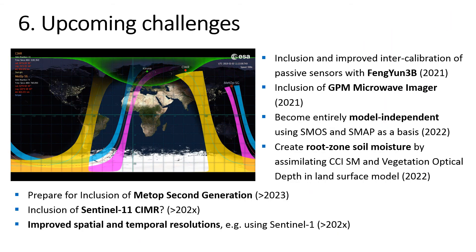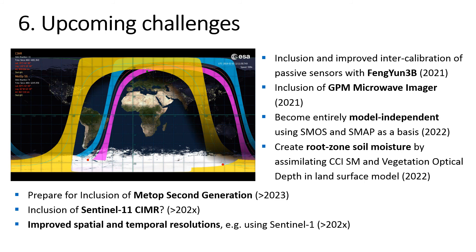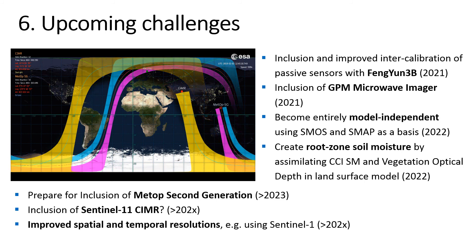I would like to summarize the future direction of the project beyond just the next upcoming version. In the next version we are working on including data from FENGYUN-3B but also from the GPM Microwave Imager. Some of the challenges beyond that include achieving model independence using SMOS and SMAP as baseline, root zone soil moisture product development by assimilating CCI soil moisture and VOD in a land surface model, preparation for inclusion of the second generation of METOP missions and other sensors planned for future launch, and also increasing the spatial and temporal resolutions of our products, for example using Sentinel-1 data.